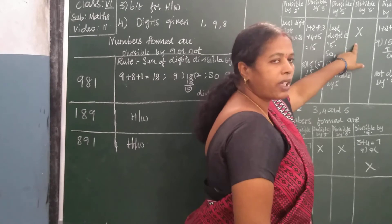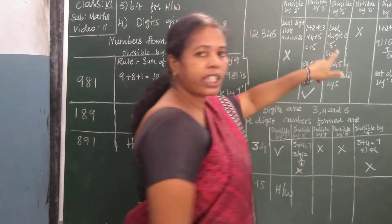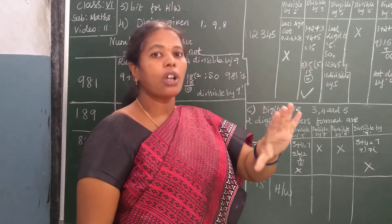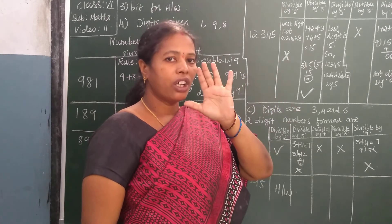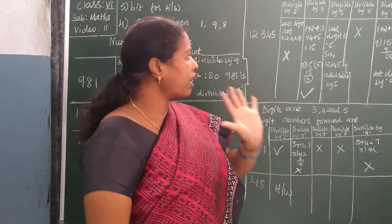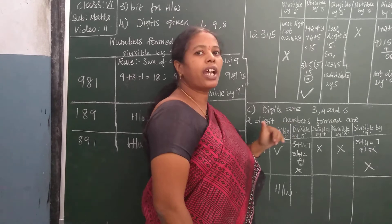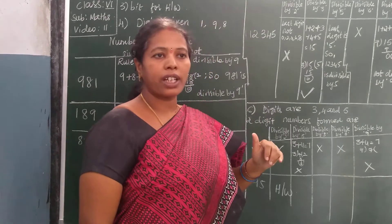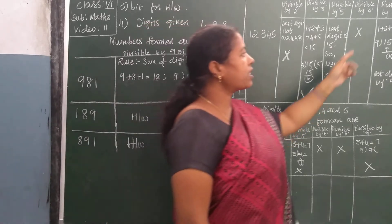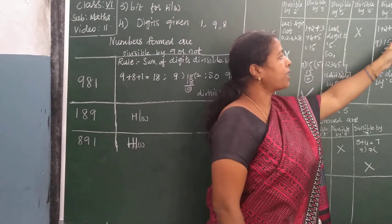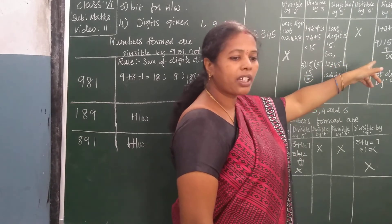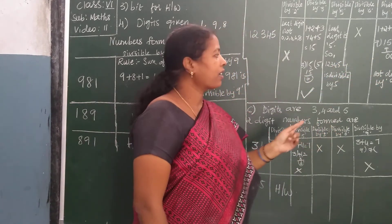Once more I will repeat the divisibility rule for 6: if the number fails either the rule for 2 or the rule for 3, then it is not divisible by 6. Divisibility rule for 9: the sum of the digits should be divisible by 9. The sum 1+2+3+4+5 is 15. Since 9 goes once with remainder 6, it is not divisible by 9.